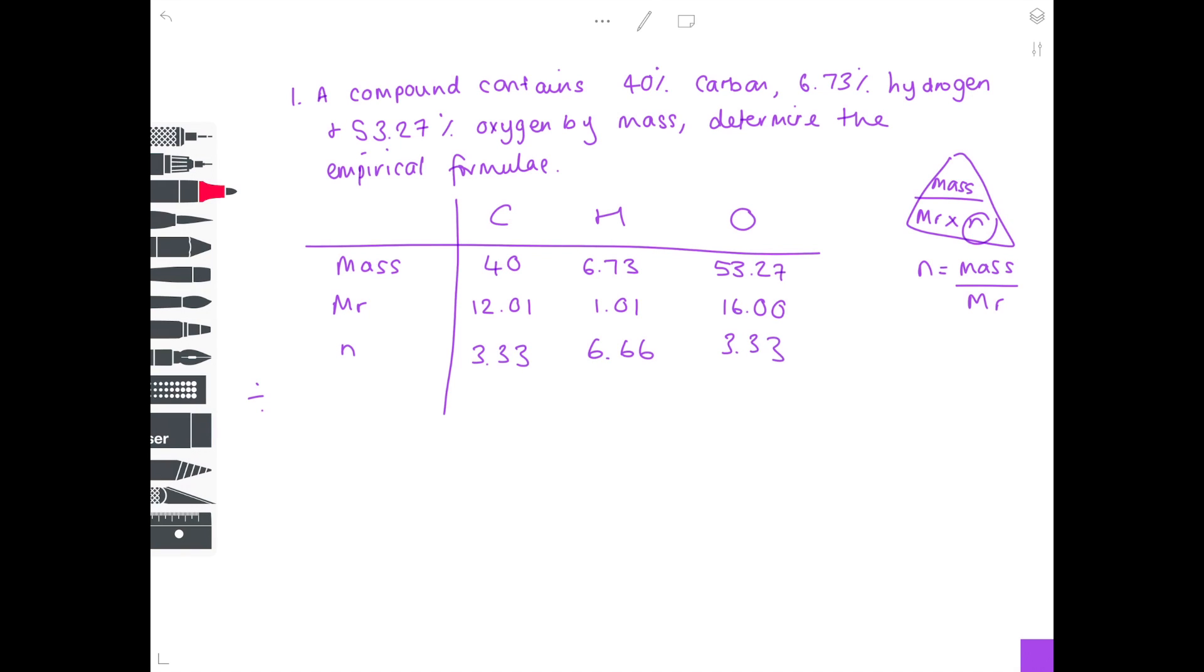Now at this point, you want to have a look at those three numbers and then choose the smallest one and divide all the values by the smallest number. That will be 3.33. So we're dividing every single value by 3.33 to get our ratio of 1 to 2 to 1. Don't forget to answer the question. We're looking for a formula, so we have a final formula, which is CH2O.